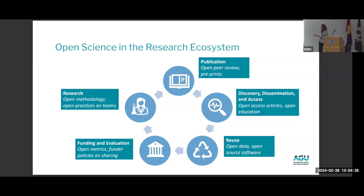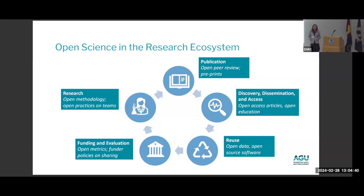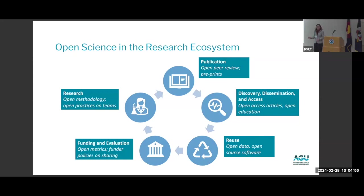You can see the practice of open science throughout the research ecosystem. It starts in your research — working more openly on your teams, inviting participation from people onto your teams, working with open methodologies. During the publication process, you can engage in open peer review. You can publish your work as a preprint to help get it out to audiences more quickly. You can publish open access articles and open educational resources, which are a big part of open science.